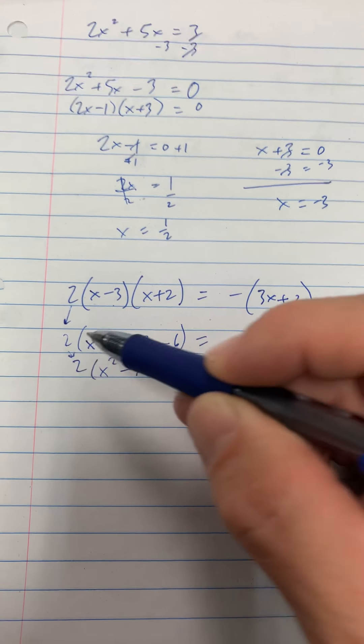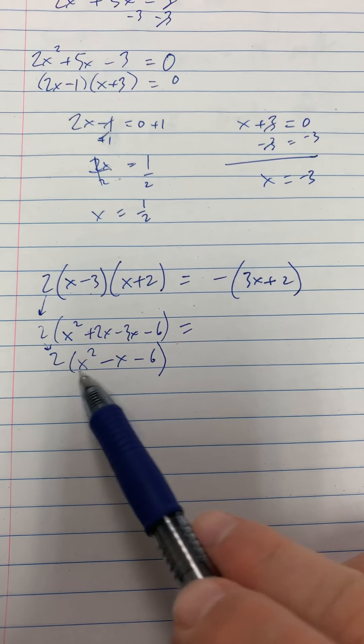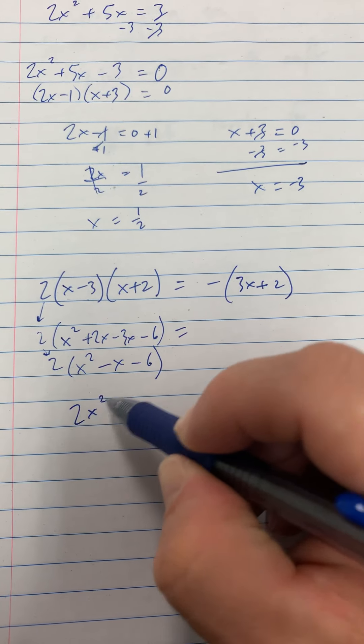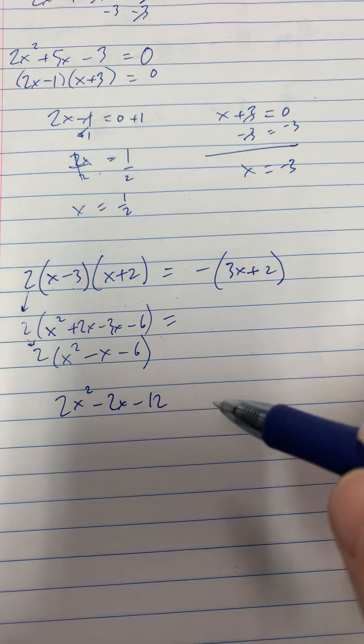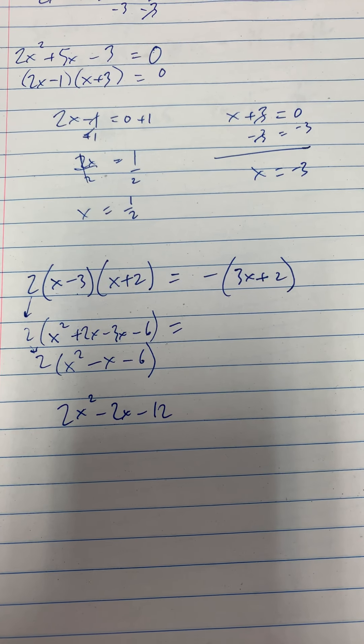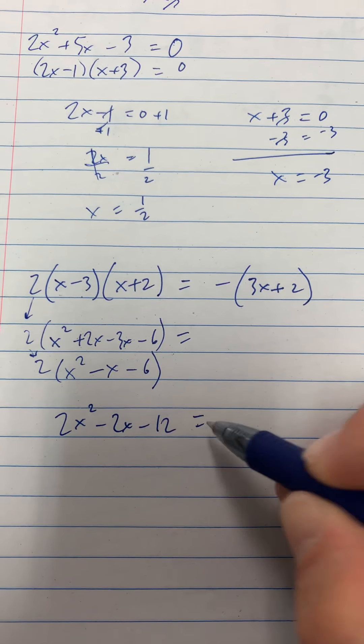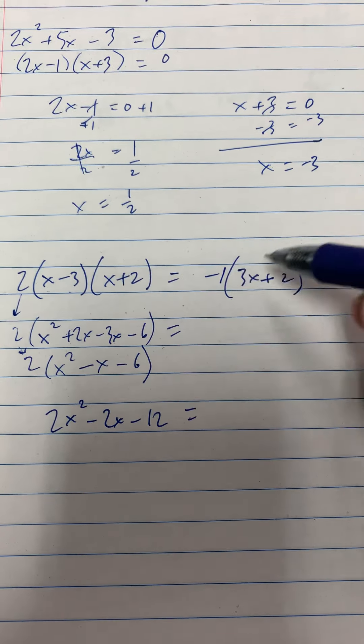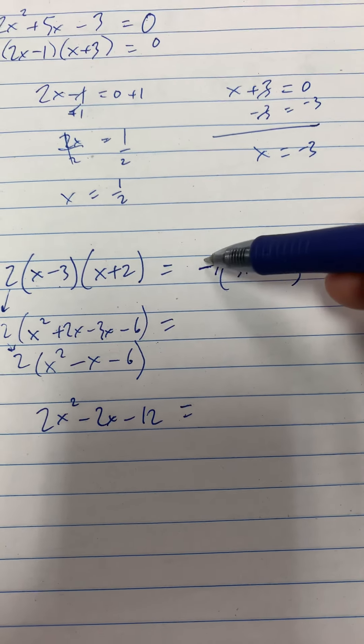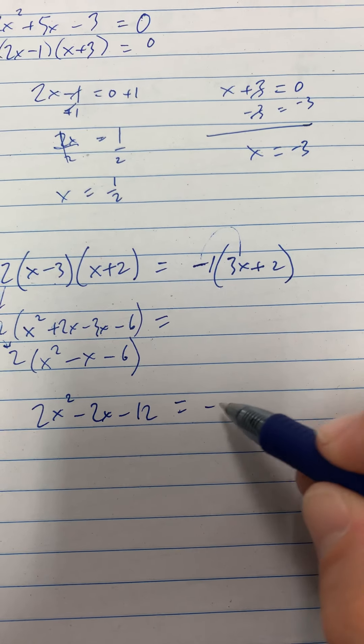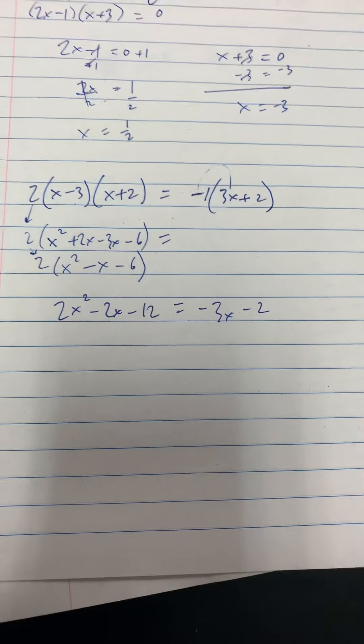And we haven't dealt with this 2 yet. All we did was just foil this out, but we still need to worry about this 2. So that's going to give us 2x squared minus 2x minus 12. And then we need to distribute this. Remember, there's always an understood coefficient of 1, but this 1 is being made negative by that negative sign right there. So negative 1 times 3x gives us negative 3x. Negative 1 times 2 gives us negative 2.